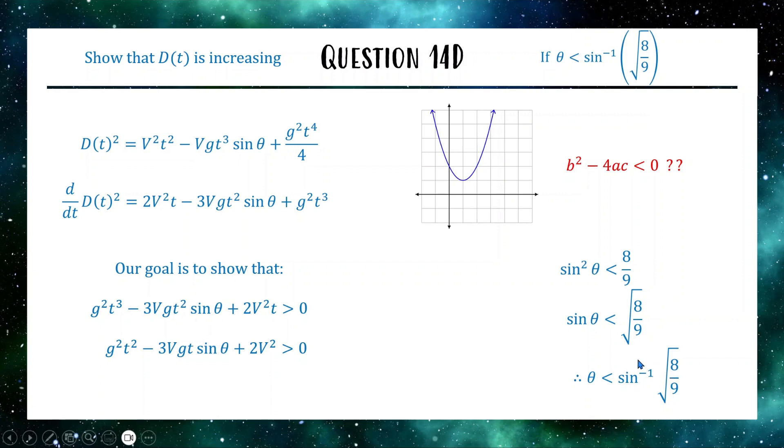When we have that result for theta, we get this result for our discriminant, which gives us this picture, which makes this quadratic always positive, which makes this derivative always positive, which makes this thing always increasing, so therefore D of T is always increasing under these conditions. And that's how we get 4 marks to finish off the extension 1 HSC exam.